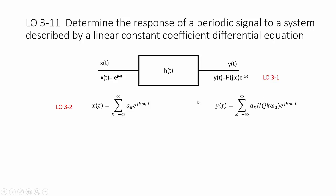The output, through the same reasoning on the previous screen, will be that same complex exponential, each one scaled by an h of j k omega naught, and then by linearity, the scalability property. We have our a sub k's coming over from our input, and we have the summation coming over from our input.